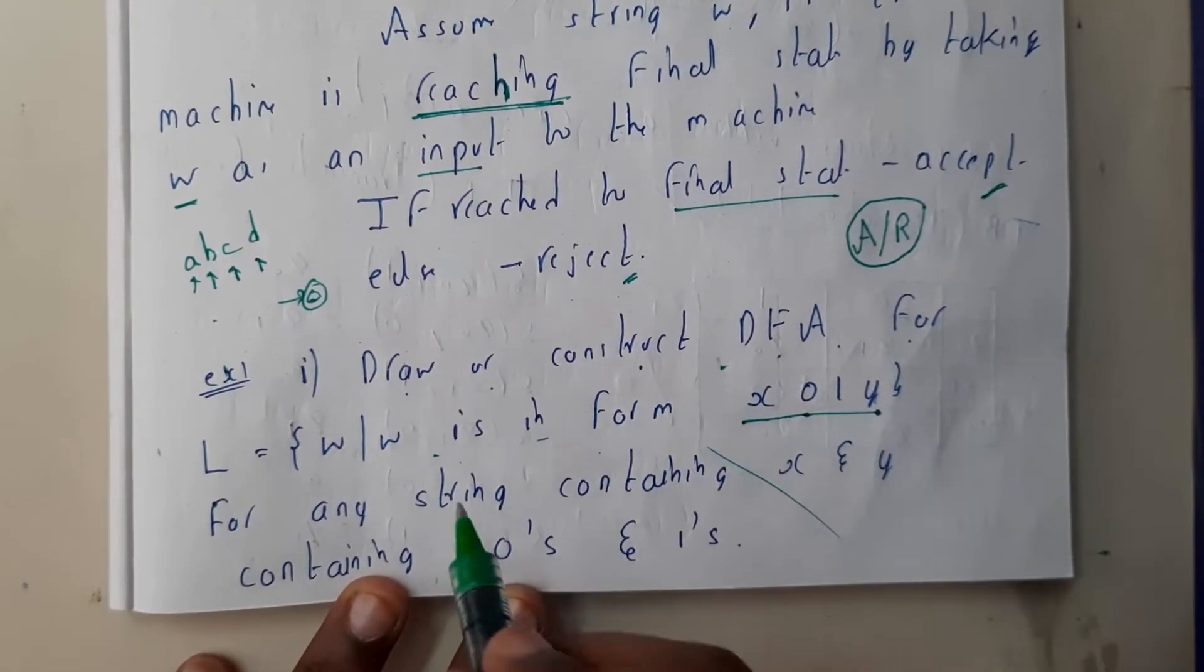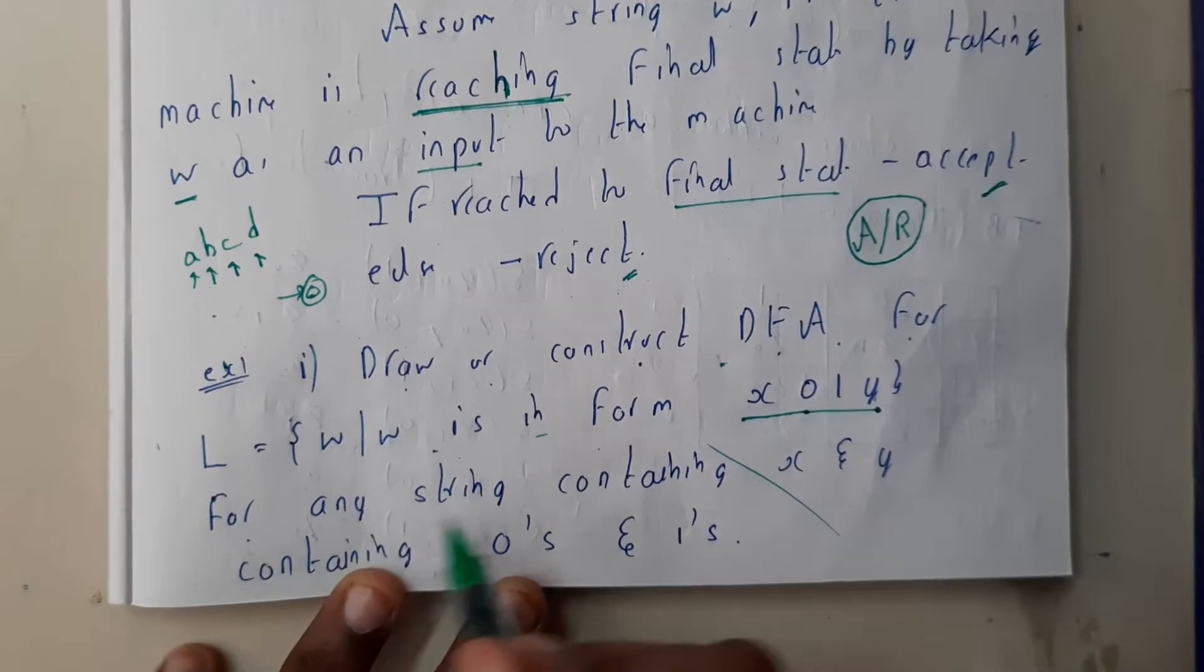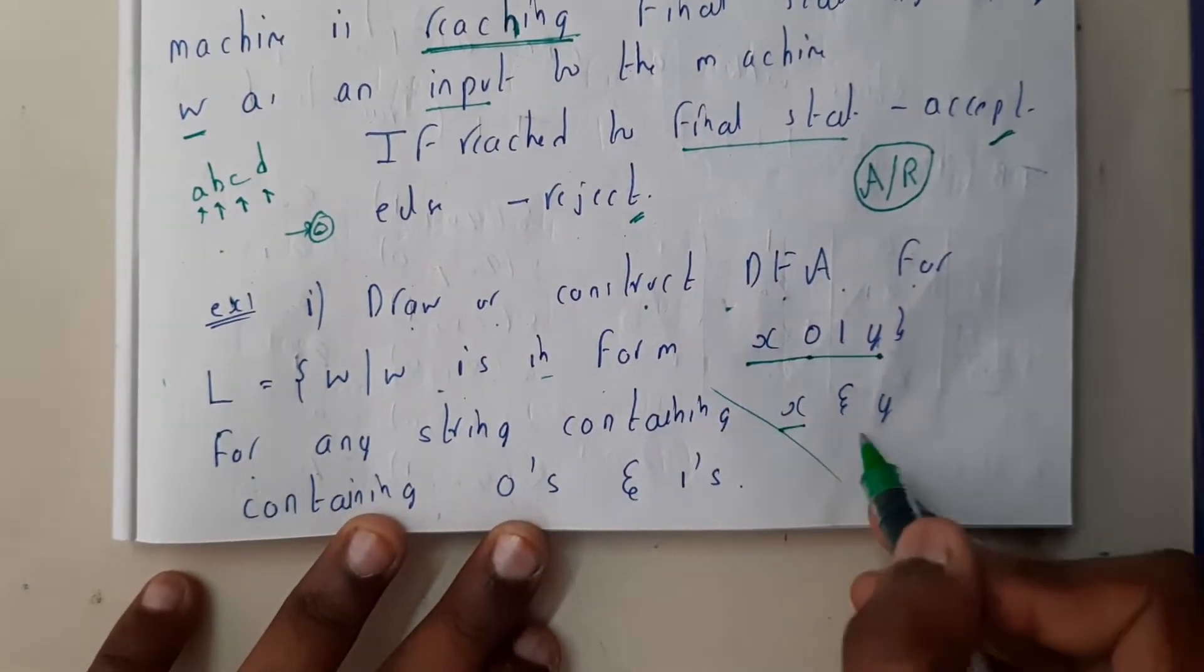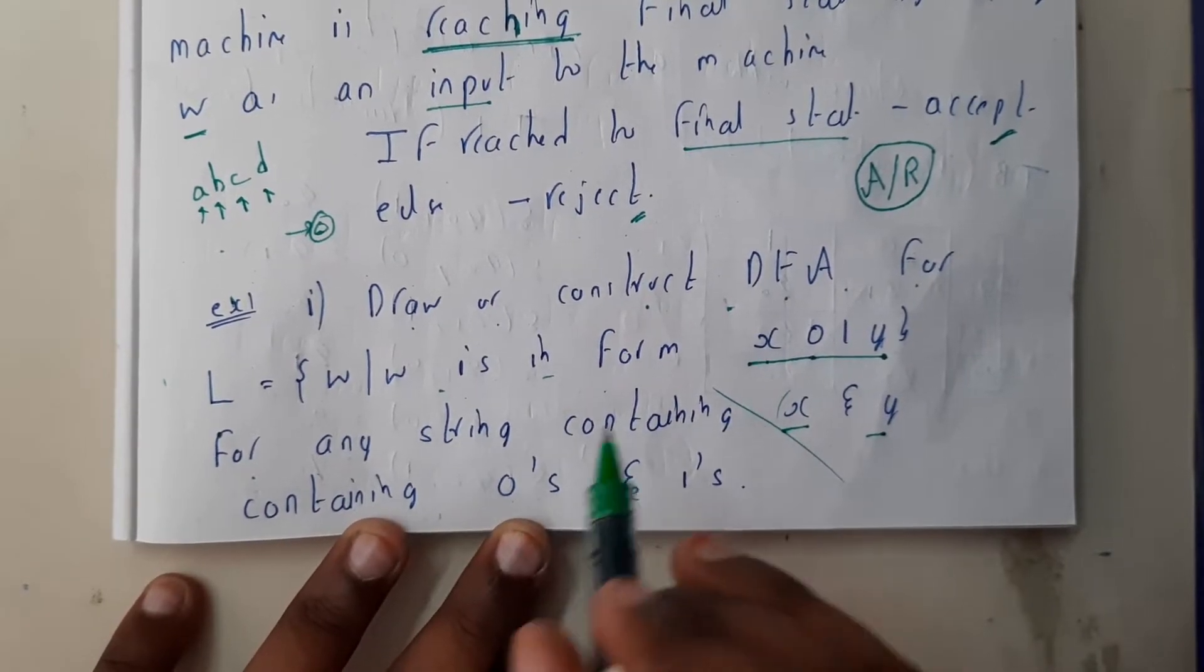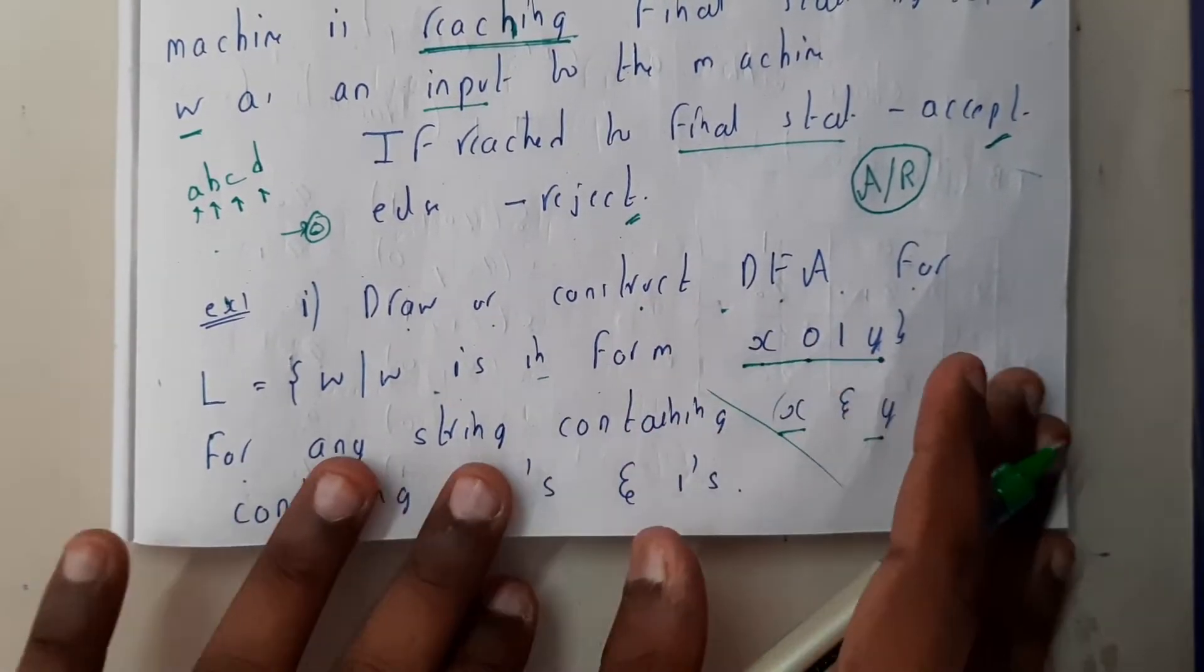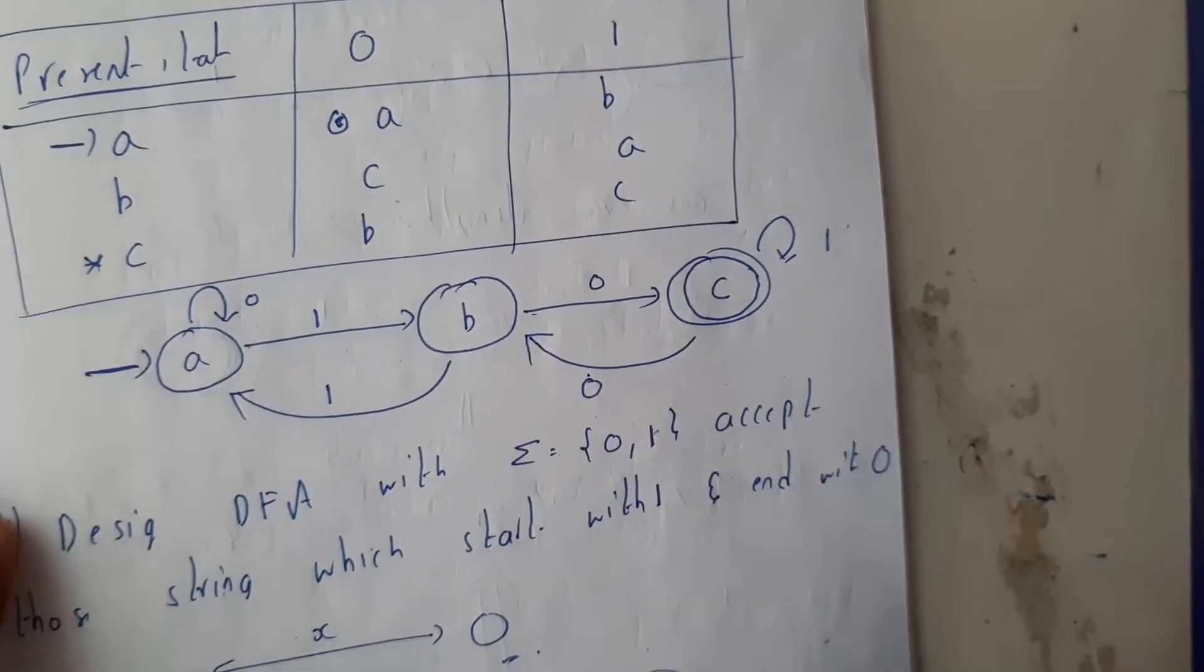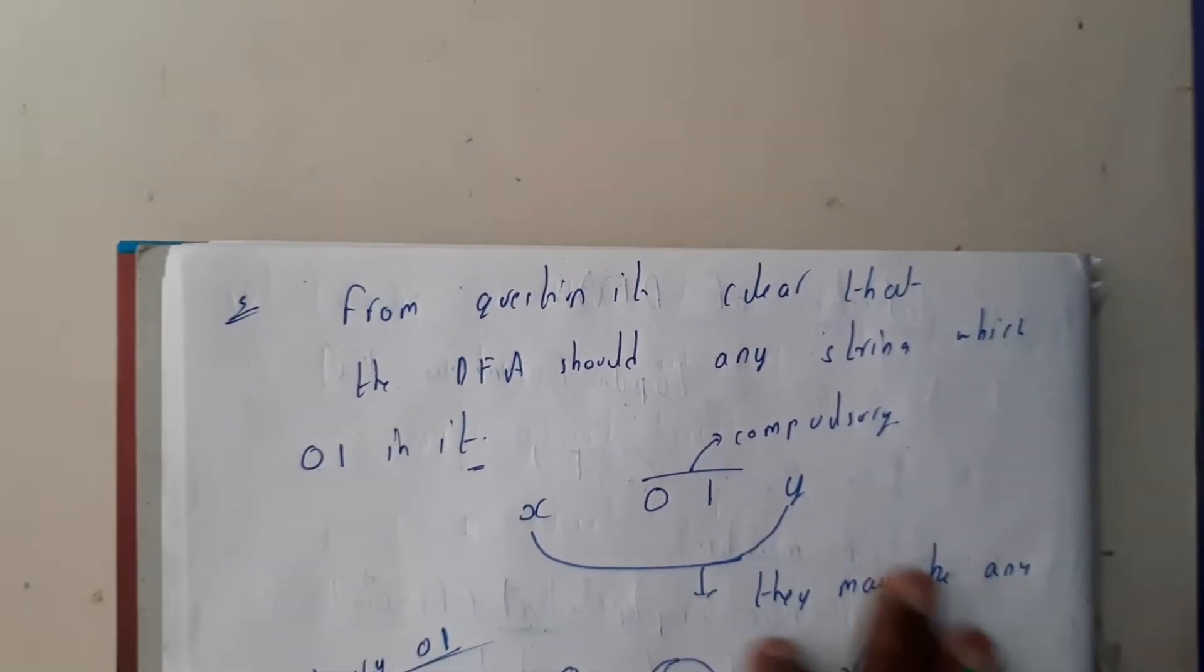X is zero one y, for any string containing x and y. Here x and y could be anything containing zeros and ones. This question is really simple, guys. This is a basic question that I wanted to discuss with you.